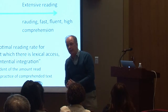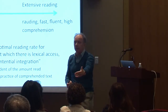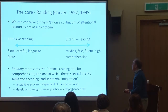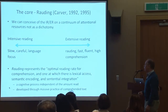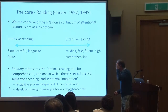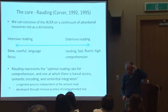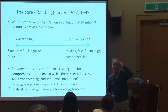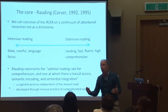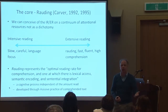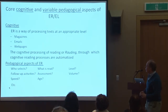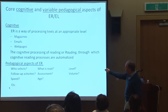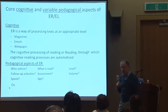On the pedagogical side of extensive reading — what materials we use, graded readers rather than a course book — Rauding is a term very similar to READ: the optimal reading rate for comprehension, involving lexical access, semantic encoding, and sentential integration. Basically, if you're reading fast and fluent, you understand the words and sentence without really thinking about it — then you're Rauding. That's fast, fluent reading. This brings us back to the distinction between ER as a cognitive process and ER as pedagogy.